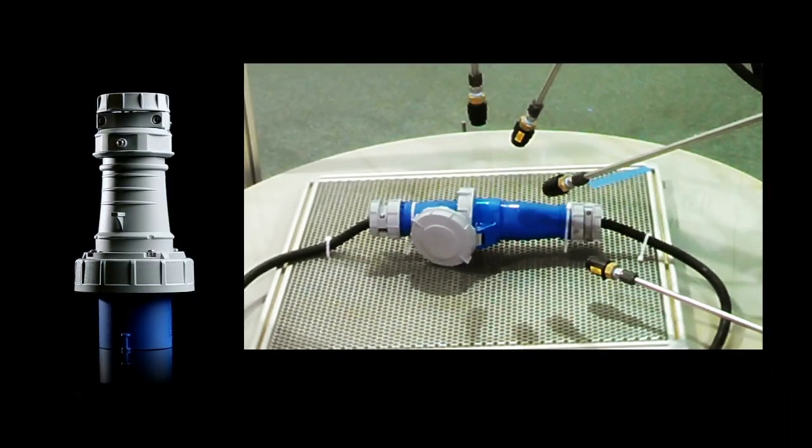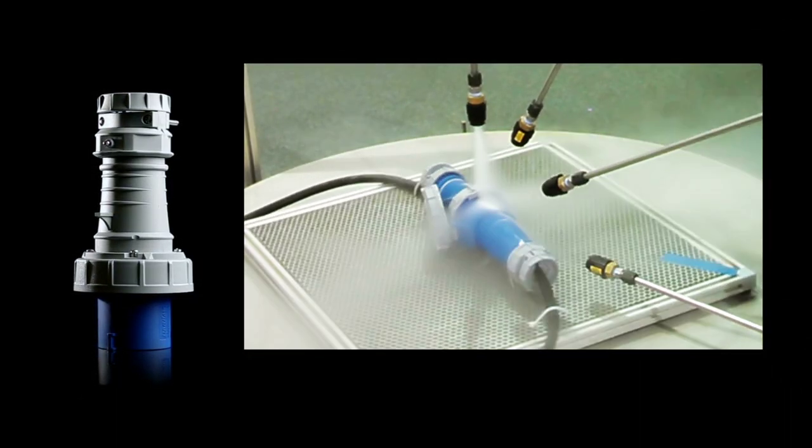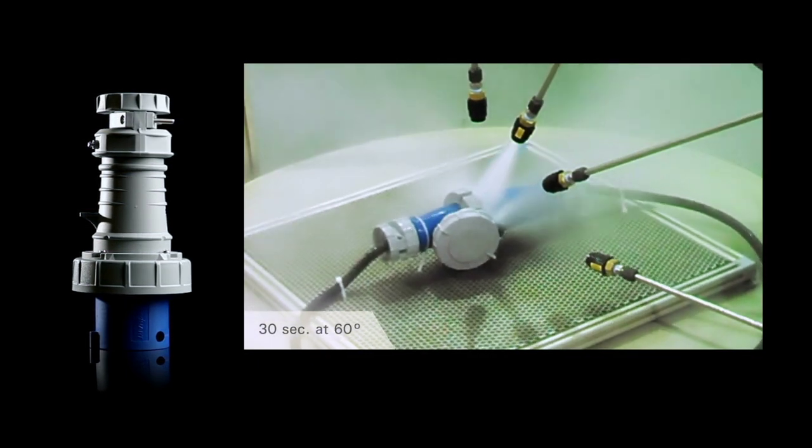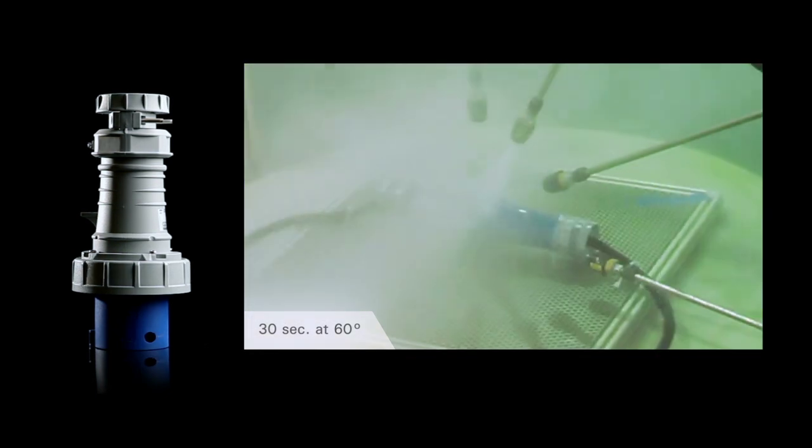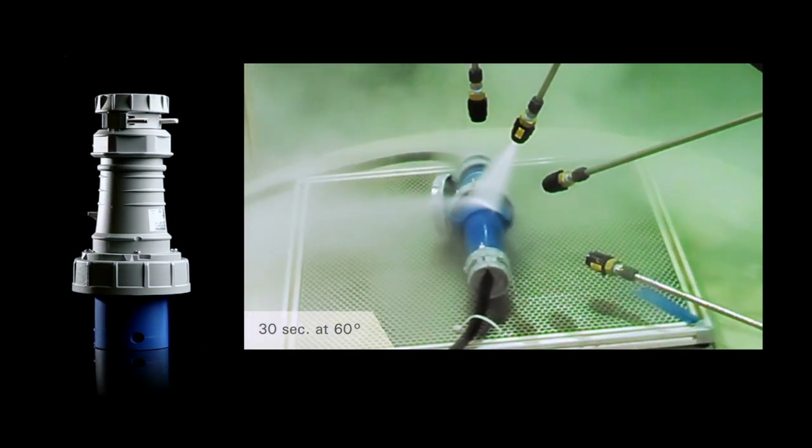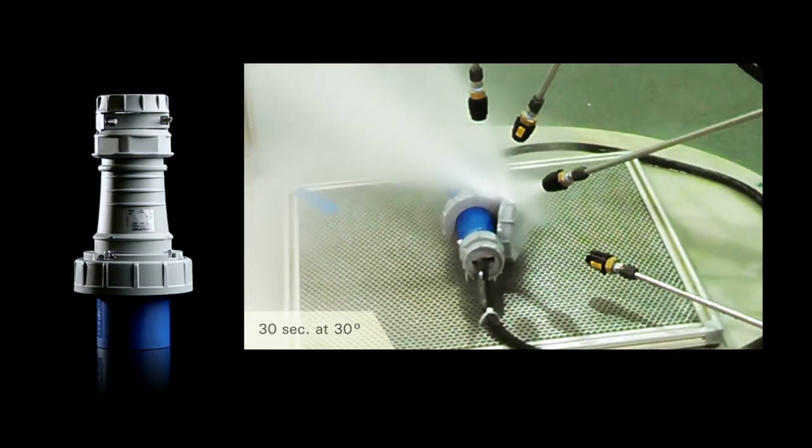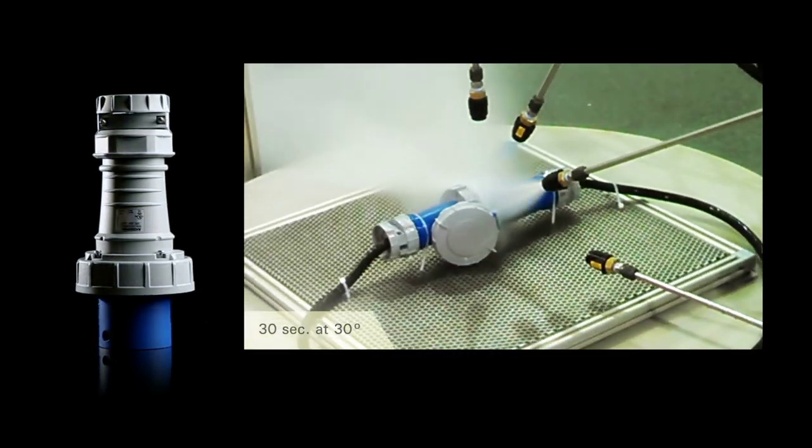The test method requires the device to be subjected to 1500 PSI water spray at 176 degrees Fahrenheit from a distance of 4 to 6 inches. This test is one of the most severe methods of ensuring equipment can handle a harsh washdown environment.